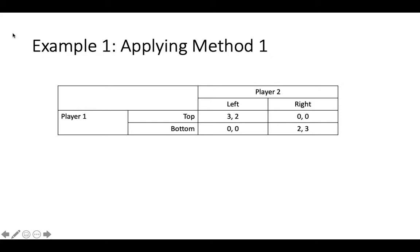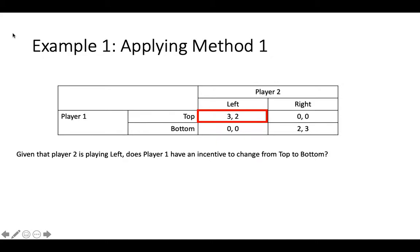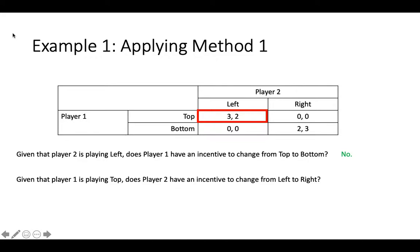Let's do some simple examples to illustrate these methods. We'll start with a simple two-player game in which each player has two possible strategies. Let's start with the first outcome, top left, beginning with player one. Given that player two is playing left, does player one have any incentive to change from top to bottom? Clearly the answer is no, since player one earns three by sticking with top but makes zero by switching to bottom. We now repeat this process from player two's perspective: given that player one is playing top, does player two have an incentive to change from left to right? Again, the answer is no. Since we've answered no for both players, we've found one Nash Equilibrium.